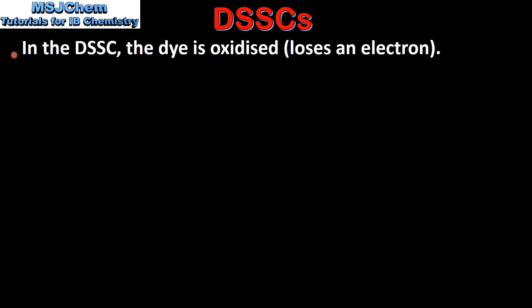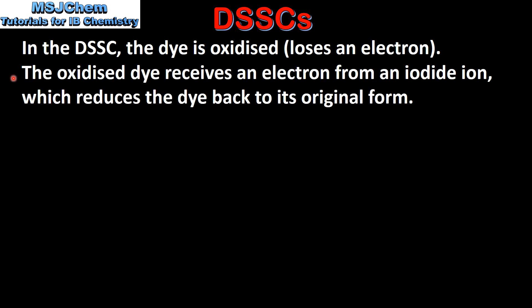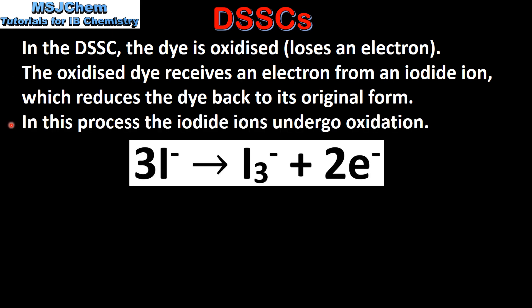In the DSSC the dye is oxidized — it loses an electron. The oxidized dye receives an electron from an iodide ion, which reduces the dye back to its original form. In this process the iodide ions undergo oxidation.